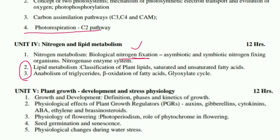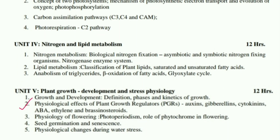Unit 5: Plant Growth, Development and Stress Physiology. Topics — growth and development, phases and kinetics of growth. Second — physiological effects of plant growth regulators: auxins, gibberellins, cytokinins, ABA, ethylene and brassinosteroids. Third — physiology of flowering, photoperiodism, role of phytochrome in flowering. Fourth — seed germination and senescence. Fifth — physiological changes during water stress.